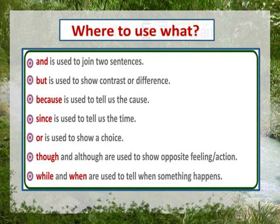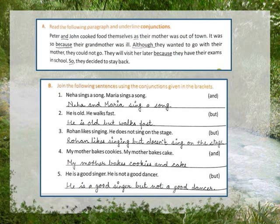Now let's do some book exercises. Exercise A: Read the following paragraph and underline conjunctions. Yahaan par ek paragraph de rakha hai — isse read karna hai aur jo bhi conjunction words hain unhne underline karna hai. Paragraph: Peter and John cooked food themselves as their mother was out of town. It was so because their grandmother was ill. Although they wanted to go with their mother, they could not go. They will visit her later because they have their exams in school. So they decided to stay back. The conjunction words are: and, as, because, although, and so.